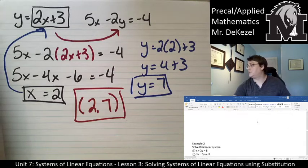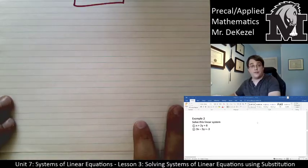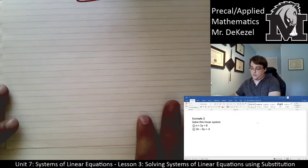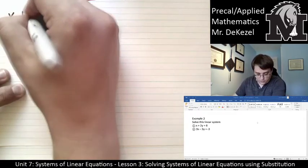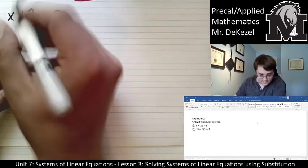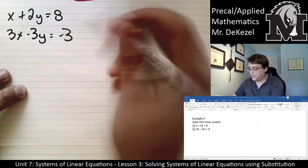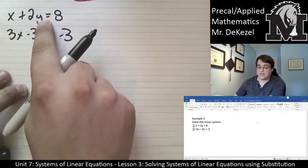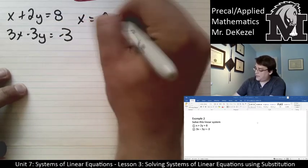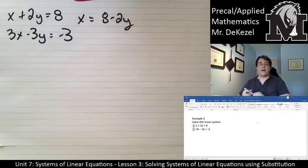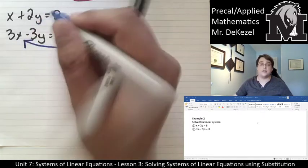Let's do another problem here. We have now x plus 2y is equal to 8 and we have 3x minus 3y is equal to minus 3. I can easily rearrange this to isolate x. I could say x is equal to 8 minus 2y.